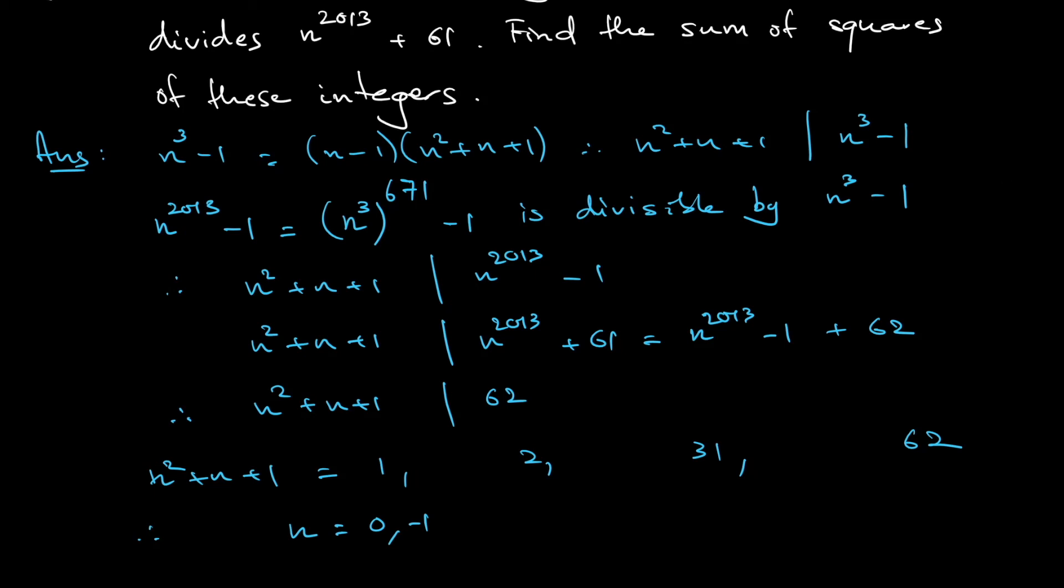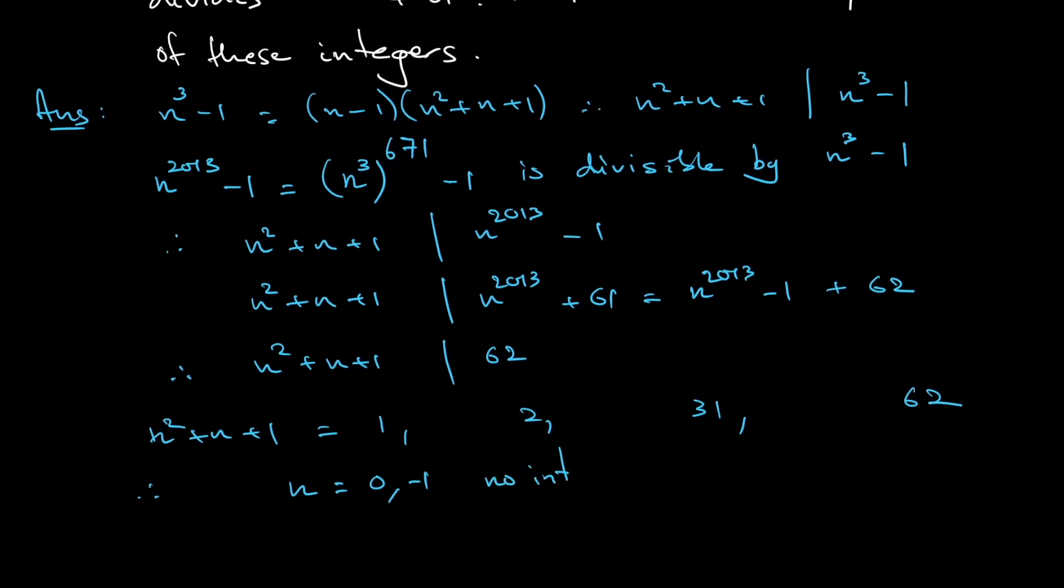In this case, no integer solution, okay? No integer solution. If n² + n + 1 equals 31, this quadratic, you can solve, n is either 6 or -5. If n² + n + 1 equals 62, again, you can solve, this has no integer solution.